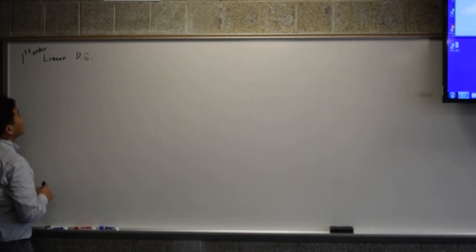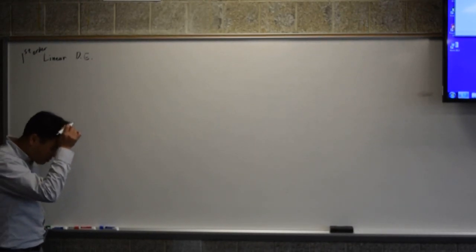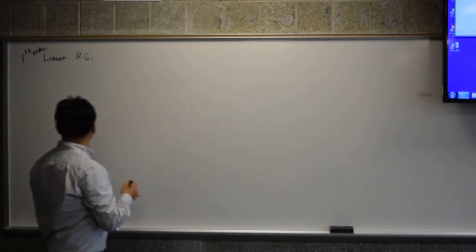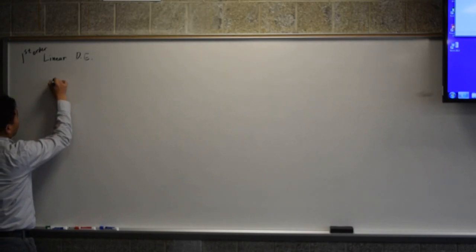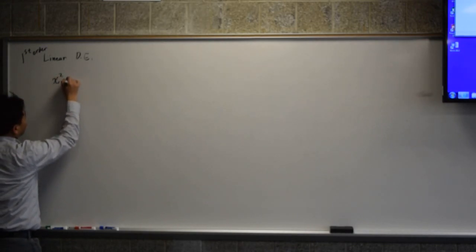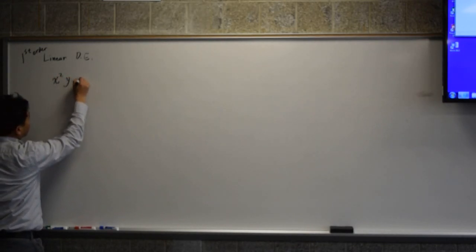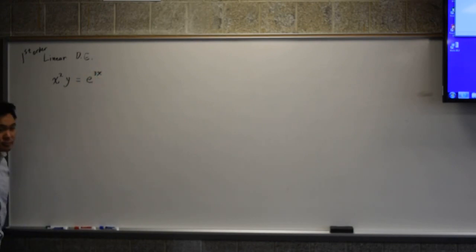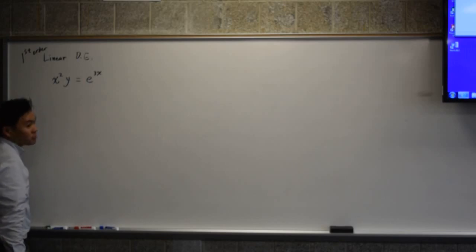I want to think about x squared times y equals e to the 3x. Let's try to see what kind of differential equation we would get if we differentiate.